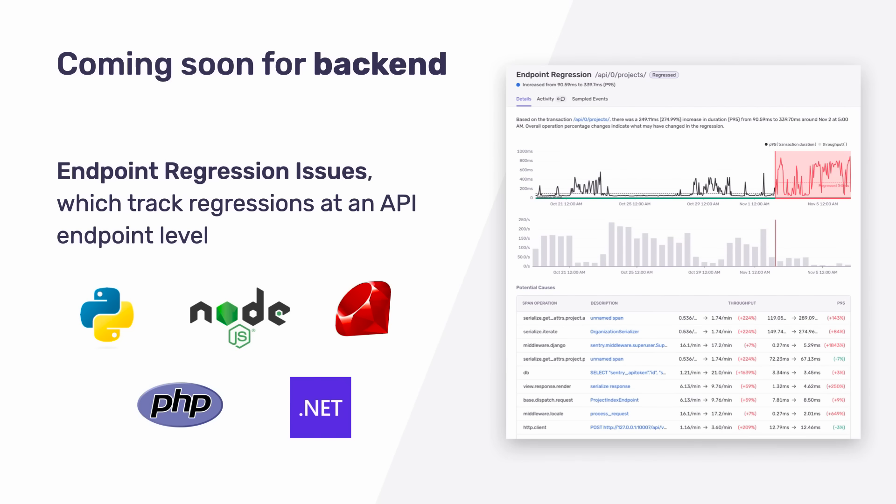Now let's talk about the backend. I demoed the function regression issue, but we're not done with making regressions more actionable. We're introducing another issue type — endpoint regression — which tracks regressions at an API endpoint level rather than a function level. It provides more high-level context with span-based data on what caused the performance of an API endpoint to regress.